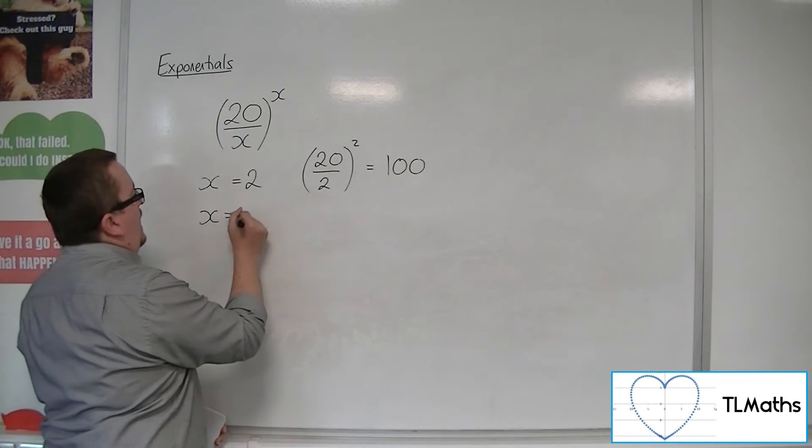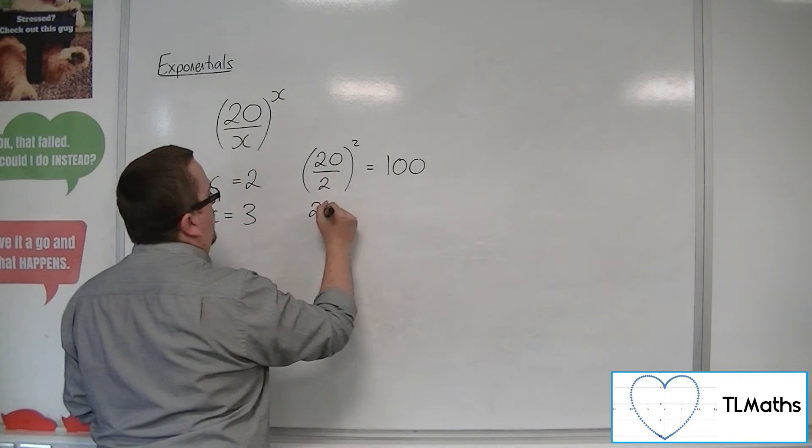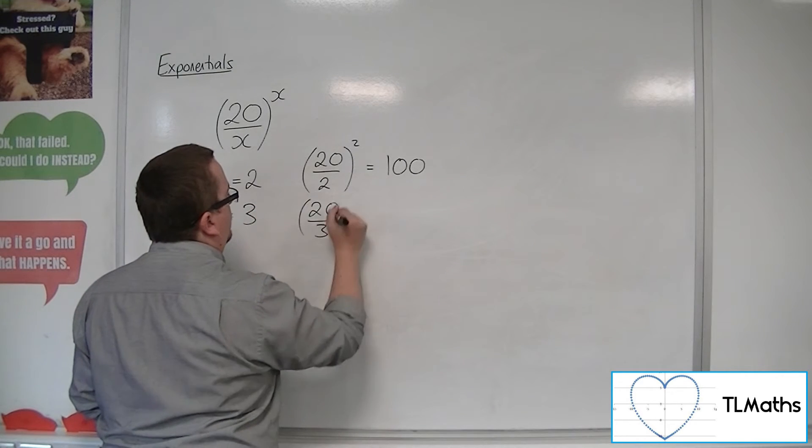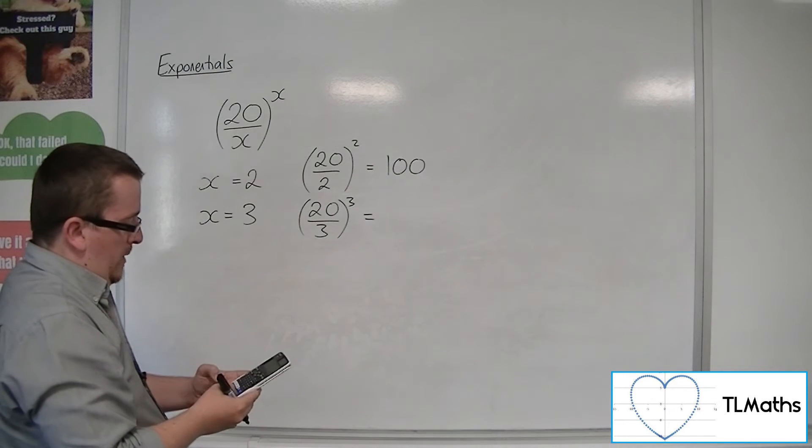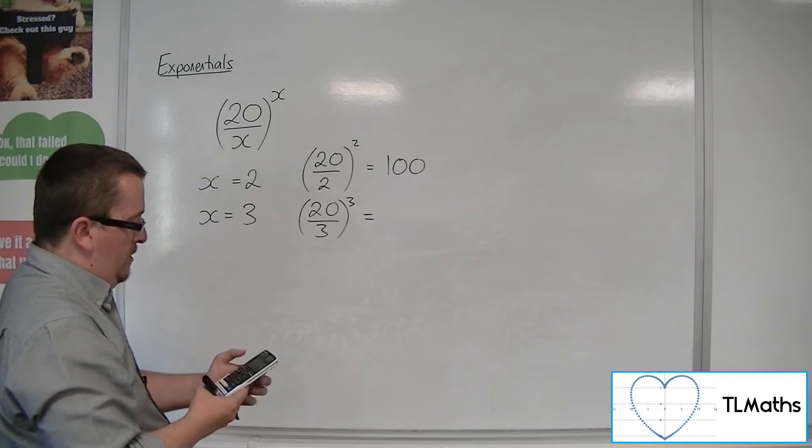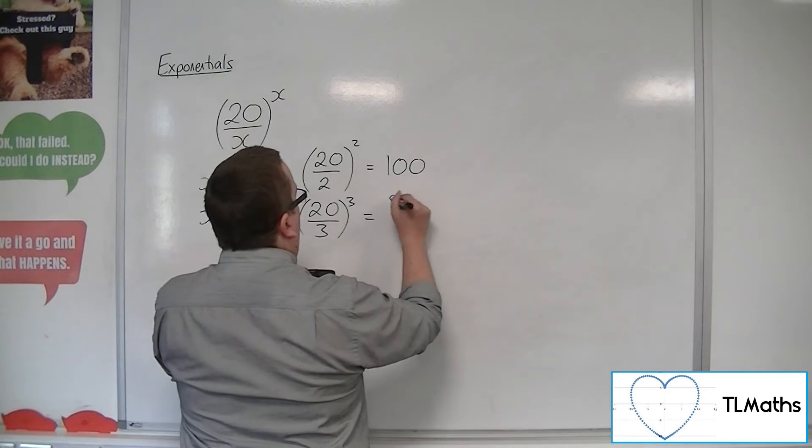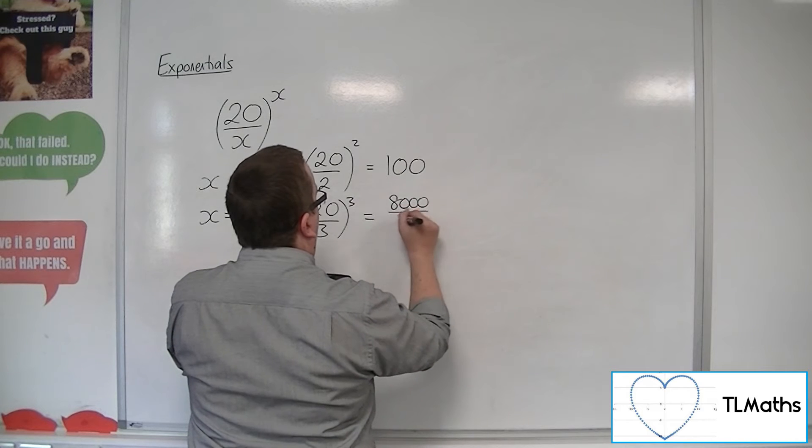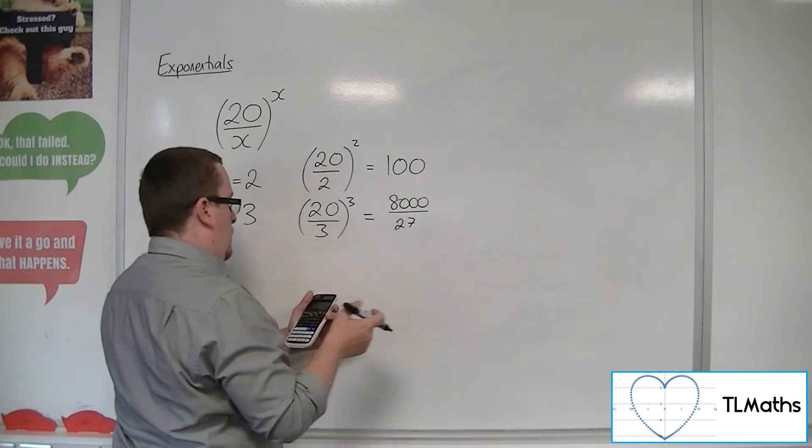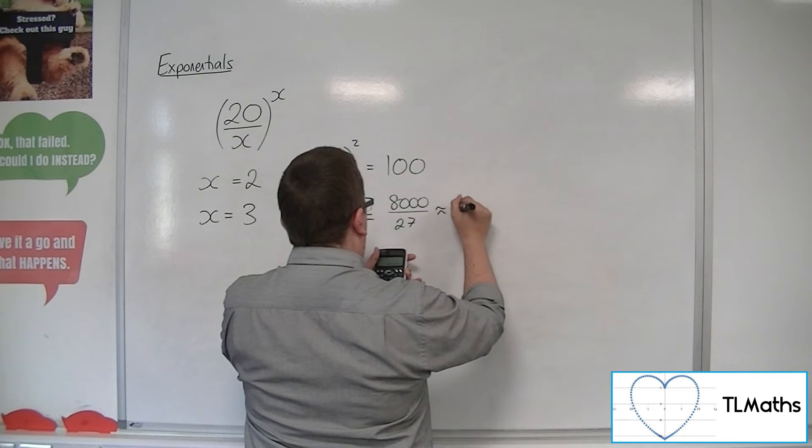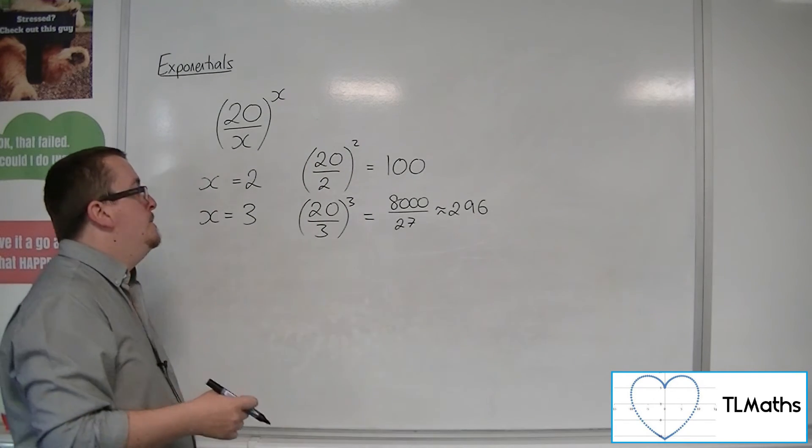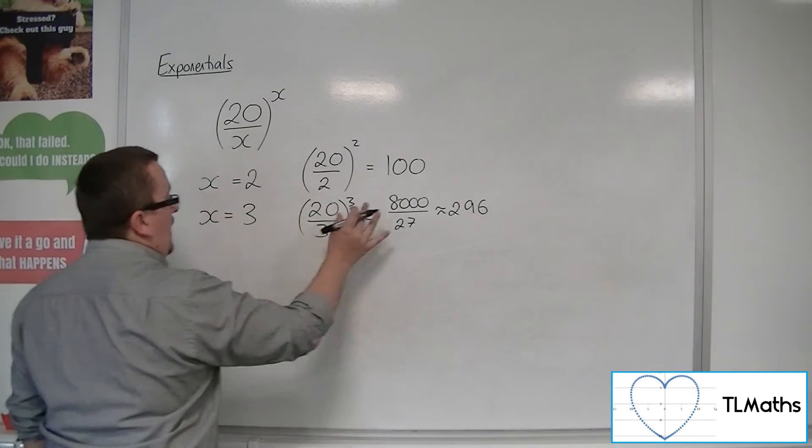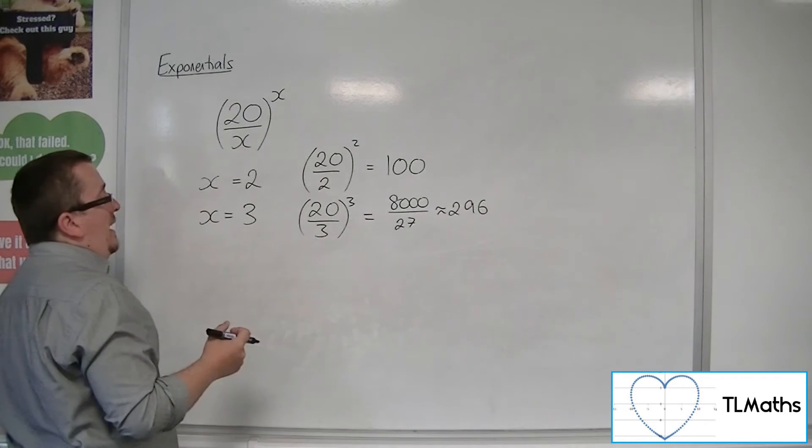So what about when x is equal to 3? We would have 20 over 3 cubed. So 20 over 3 and then cubed is 8,000 over 27, which is approximately 296 to the nearest unit. So we can see that when x is 3, we get a larger value.